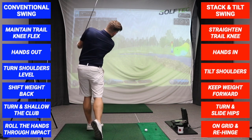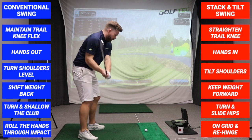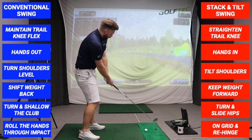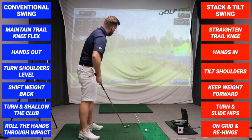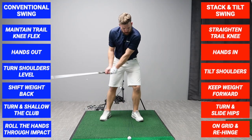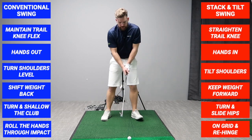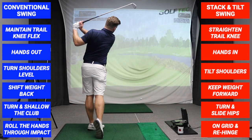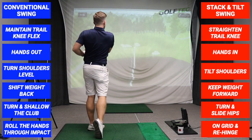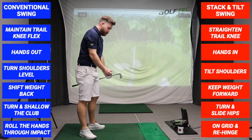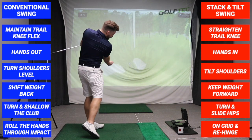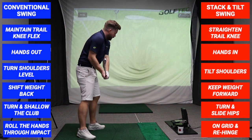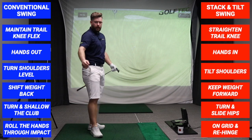In the backswing we're tilting the shoulders to the left, and through impact we're tilting those shoulders to the right. Into the follow through I'm continuing to push my hips forward and weight forward, keeping my hands and club on the arc - moving it round to the left and keeping the face square to the arc of the swing - then just rehinging into the finish. In the conventional swing we're out of position and trying to release the hands to draw the ball from behind the golf ball, which is nearly impossible.